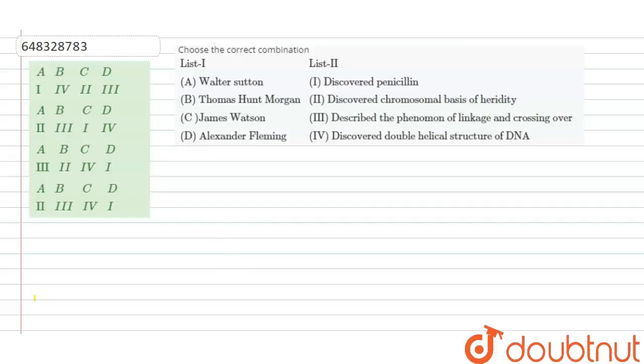It is asked that List 1 and List 2, which are the correct options. Number one or number A is given as Walter Sutton.